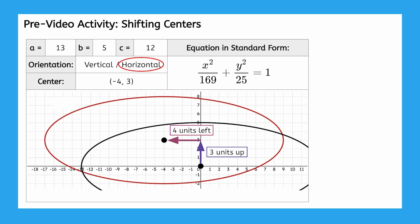Just like with circles and parabolas, we can translate ellipses horizontally by adding or subtracting to the x, and we can translate vertically by adding or subtracting to the y. In this particular case, to shift the ellipse 4 units left, we add 4 to x, and to shift it 3 units up, we subtract 3 from the y.